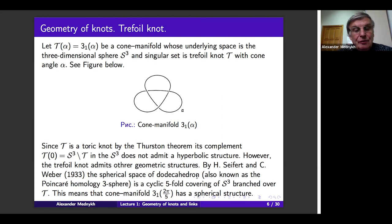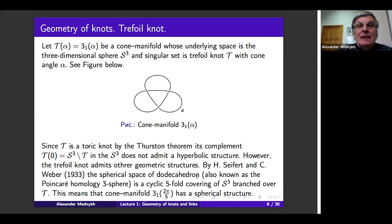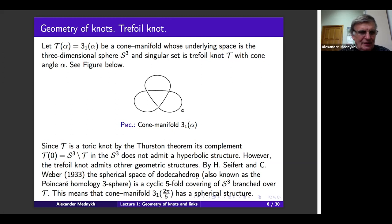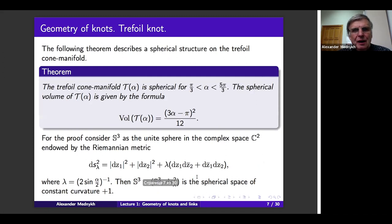Poincaré himself constructed a counterexample to his first hypothesis — that is exactly the Poincaré sphere, or the spherical space of the dodecahedron. You can realize the dodecahedron — a polyhedron consisting of exactly 12 pentagons — and identify opposite faces in pairs to get this Seifert-Weber manifold. You must be careful because this dodecahedron is realized in spherical space, meaning the dihedral angles of the dodecahedron are quite large, supposed to be 2π/3. It can be shown that if angle α is between π/3 and 5π/3, then the trefoil cone manifold admits a spherical structure.